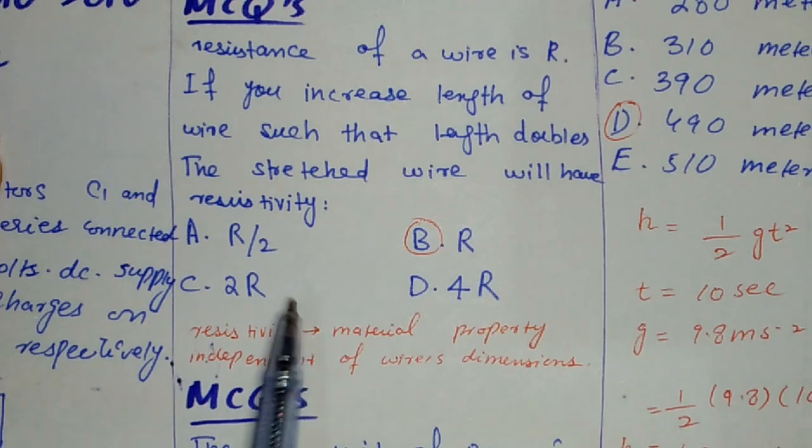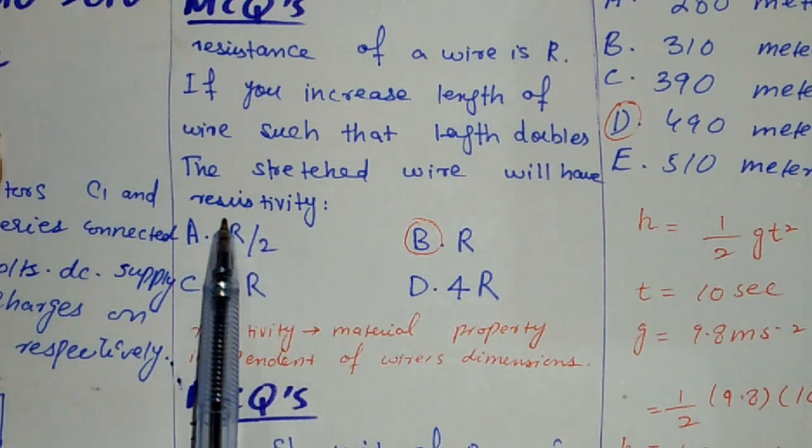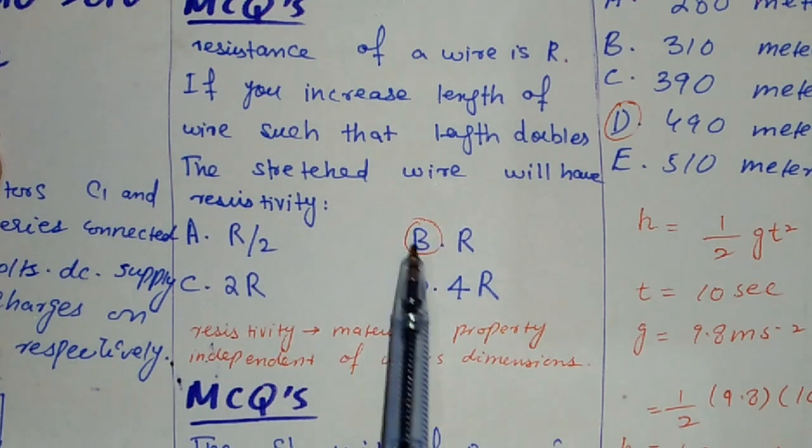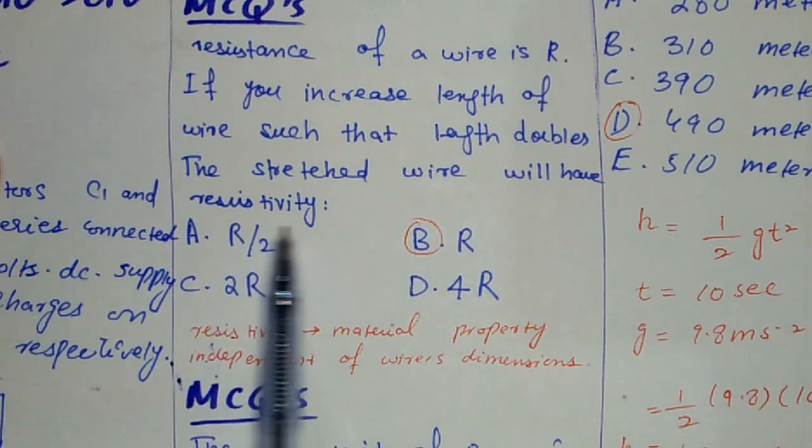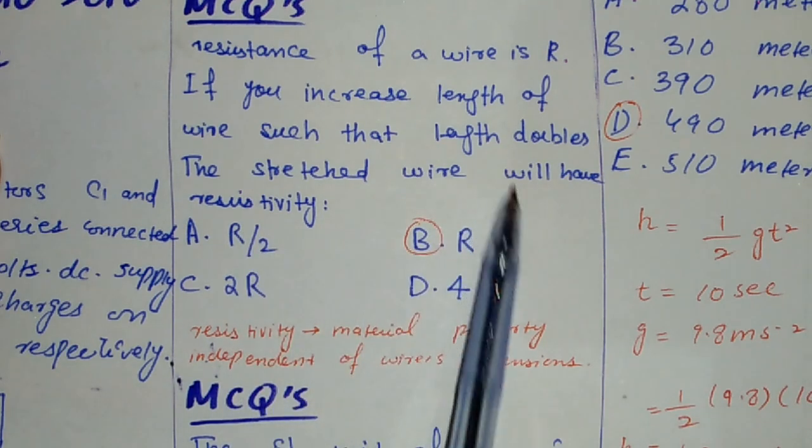If they asked us about resistance, we would use the formula R equals rho L over A. Resistance depends on resistivity, length, and area of cross section. But here it's very simple for us. We understand that resistivity will be the same because it is independent of any dimension of the wire.